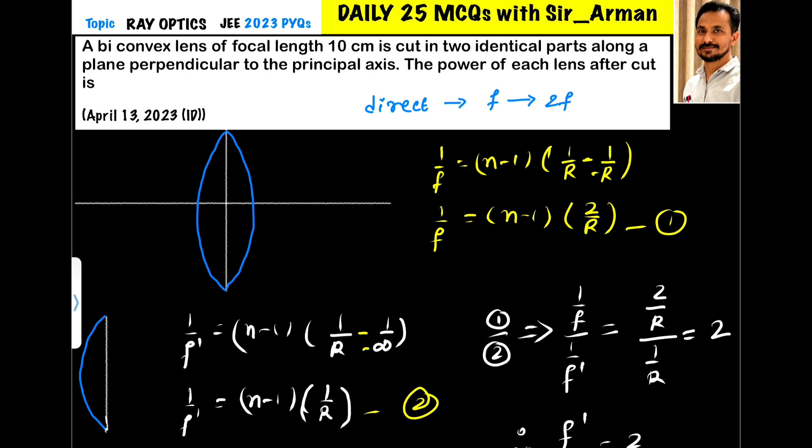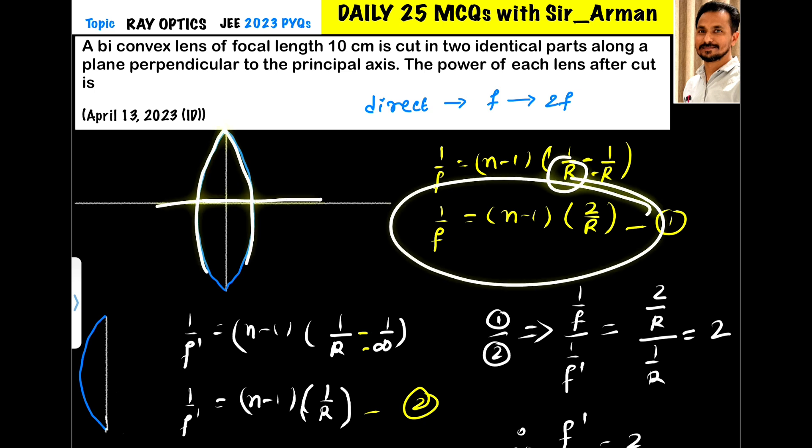So for the first part, 1 upon f equals n minus 1, this is the lens maker equation, 1 upon r1 minus 1 upon r2. So for the first part radius is positive so it is r, for the second part radius is negative so it is minus r.